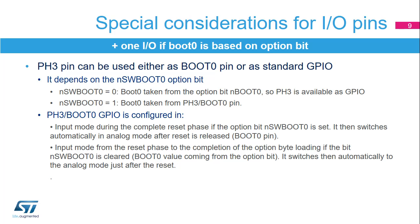PH3 may be used either as a boot pin (BOOT0) or as a GPIO. Depending on the nSWBOOT0 bit in the user option byte, it switches from the input mode to the analog input mode — after the option byte loading phase if nSWBOOT0 equals 1, and after reset if nSWBOOT0 equals 0. So the PH3 pin is not a dedicated pin: it can be used during reset time to select the boot mode and can become a general-purpose I/O during runtime.